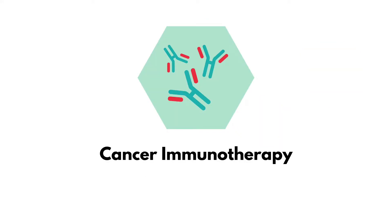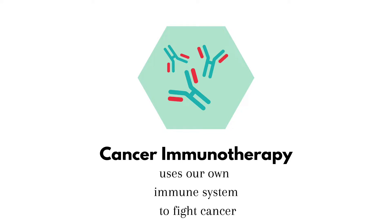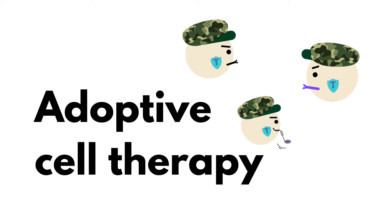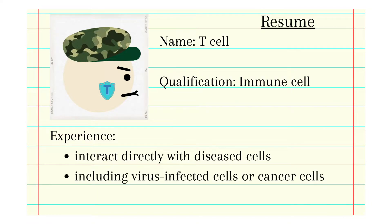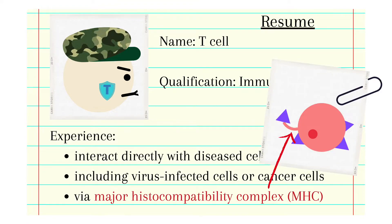Cancer immunotherapy is a type of cancer treatment that uses our own immune system to fight cancers. One of the main types of cancer immunotherapy is adoptive cell therapy. T-cells are immune cells that interact directly with diseased cells, including virus-infected cells or cancer cells that display their antigens via specific structures called the major histocompatibility complex, MHC.